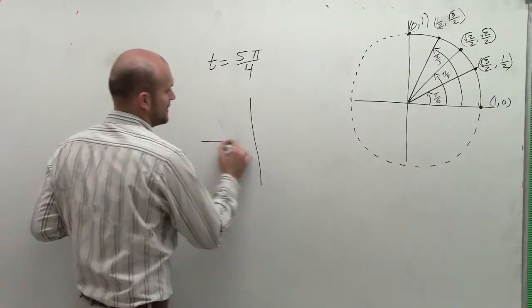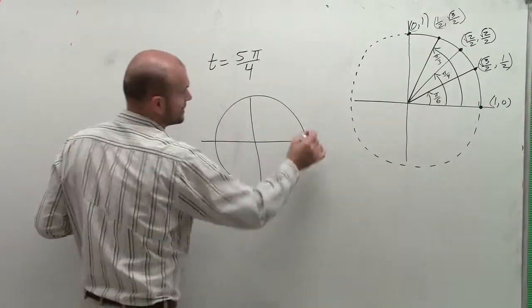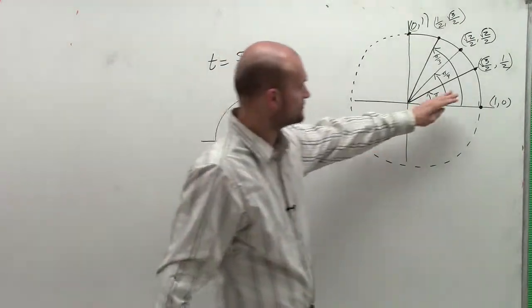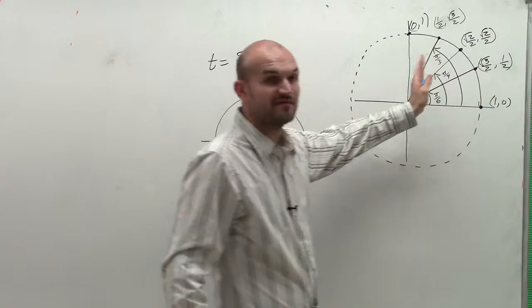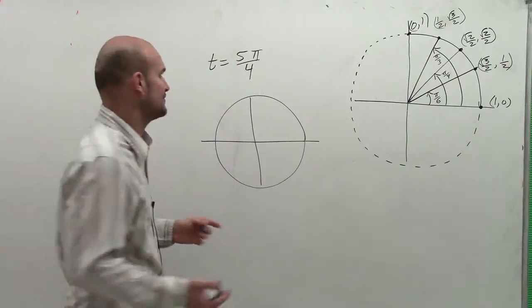When I look at my unit circle, and here's the unit circle for just my first quadrant, I'm going to use that to map around the rest.